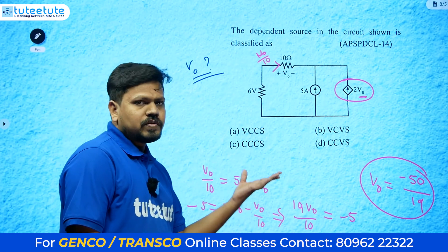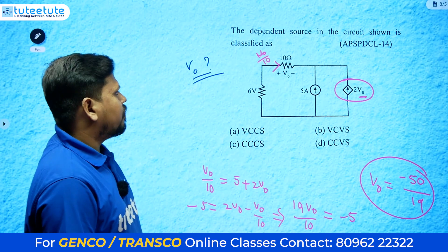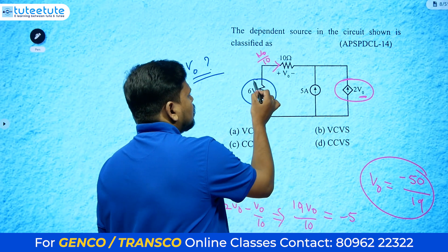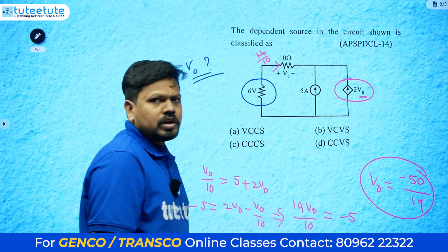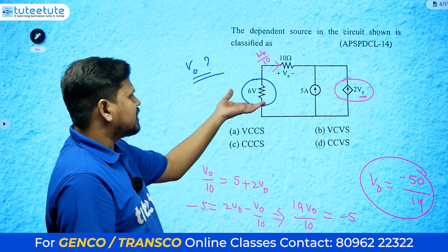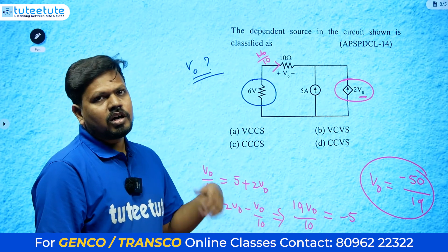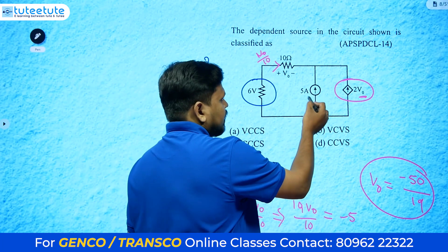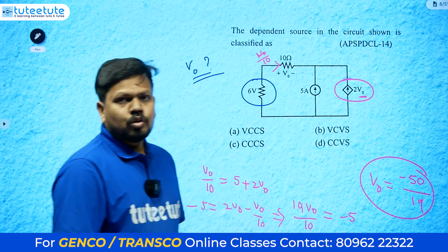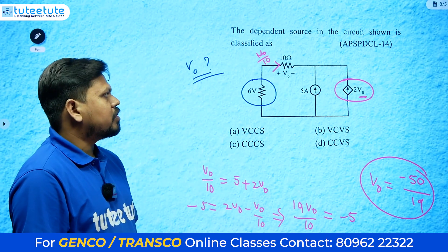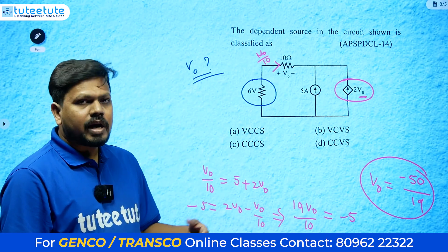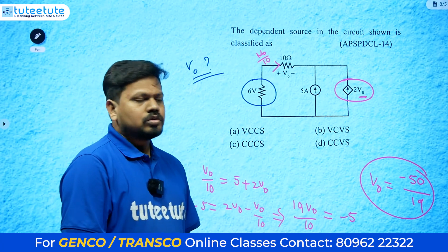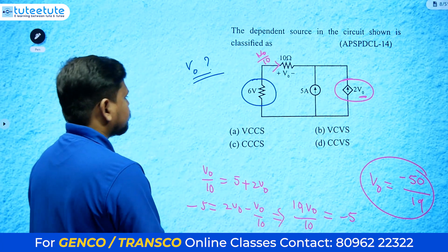From this circuit they could also ask about power dissipation in a resistance, or power delivered by the current source — different models of questions are possible based on the same setup.